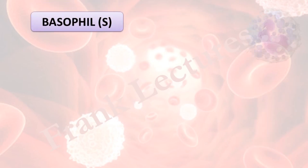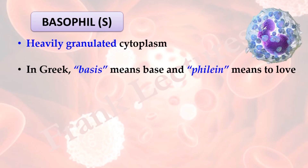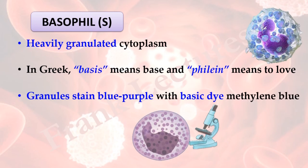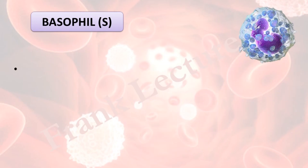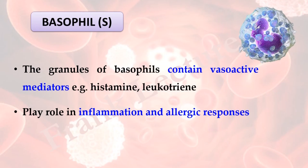Basophils: The cytoplasm of basophils is heavily granulated — an enormous number of granules are present, as seen in the image. In Greek, basis means base and philos means to love, i.e. base loving. It refers to the fact that granules of basophils are readily stained by basic dyes, staining blue-purple with basic dye methylene blue. Under light microscope, basophils look like this. The granules of basophils contain vasoactive mediators, for example histamine and leukotriene. Vasoactive mediators are substances which influence the tone and diameter of blood vessels. Basophils play a role in inflammation and allergic responses. Basophils are relatively rare in circulation — they constitute less than 1% of the blood leukocytes.